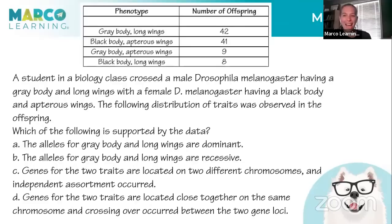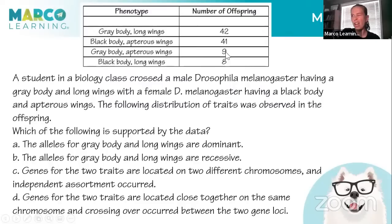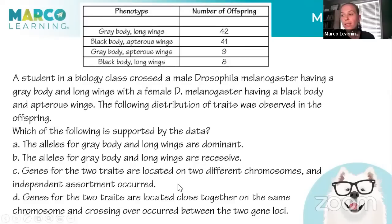Practice question: a male Drosophila with gray body and long wings is crossed with a female with black body and vestigial wings. In the offspring, the parental types are 42 and 41, and the recombinants are 9 and 8. Earlier we said you'd expect a 1:1:1:1 ratio in a test cross. Because we don't see that equal ratio, we know these two traits are located close together on the same chromosome — they're linked. The few recombinant offspring appear due to crossover.